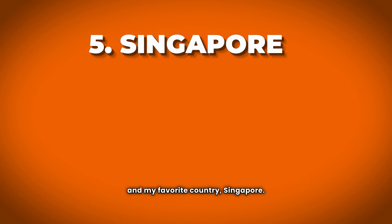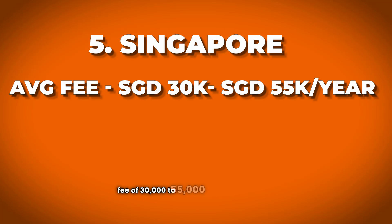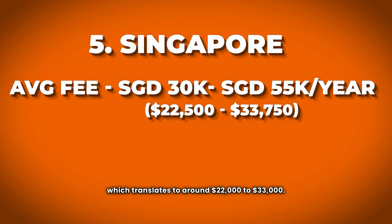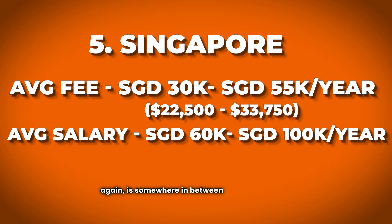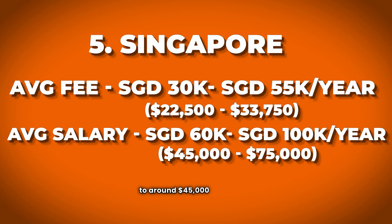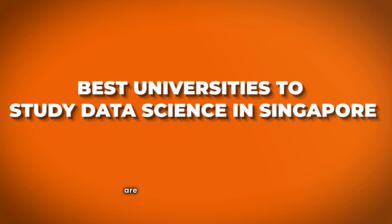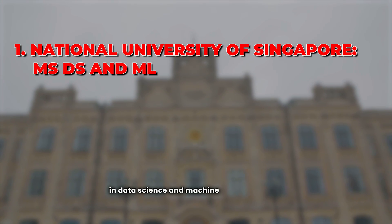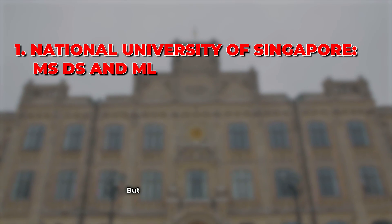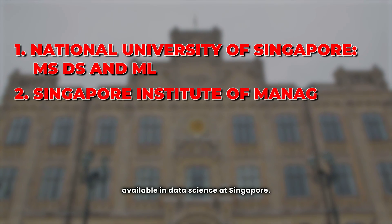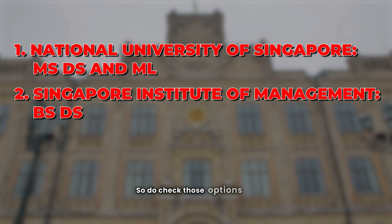Moving to Asia, and my favorite country in this region — Singapore. Average fees are S$30,000 to S$55,000, translating to about $22,000 to $33,000 USD. Starting salaries range from S$60,000 to S$100,000, or about $45,000 to $75,000 USD — better than UK but lower than the US. The main option here is NUS, which has a proper Master's in Data Science and Machine Learning. There is also a bachelor's degree available at Singapore Institute of Management, though master's options are limited.